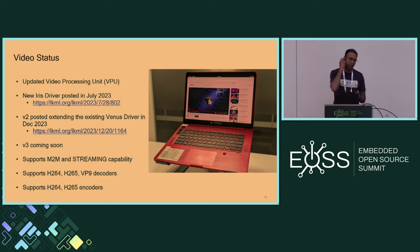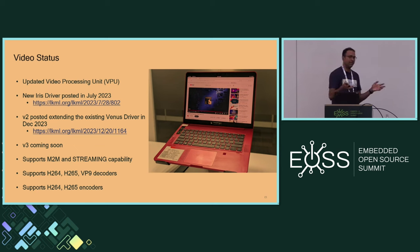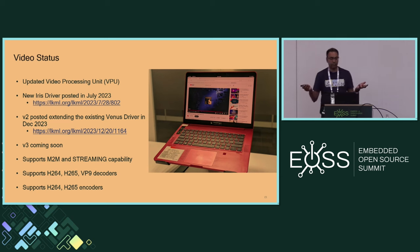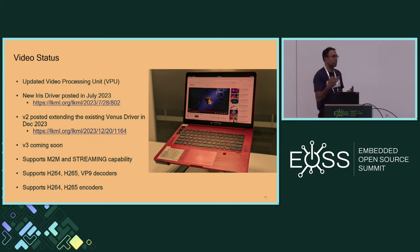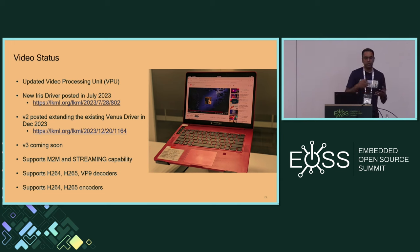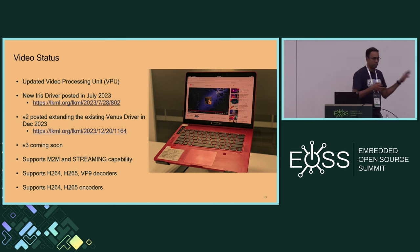In terms of video, there's a new VPU block — video processing unit. It's a new generation of the IP compared to the previous generation. The previous generation was called Venus; this one's called Iris. A new driver for Iris was posted out in July of last year, but it was a completely new driver not taking into account what already existed, so it was obviously not the right approach. There was effort done to merge these two drivers together and add Iris support on top of the Venus driver, but the way Venus is structured made it really hard. So the plan now is to write a completely new driver from scratch that supports both Iris and Venus, then over time deprecate the older driver.